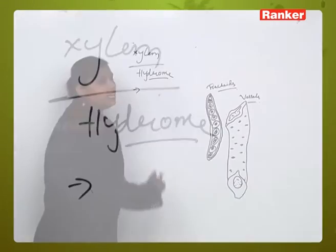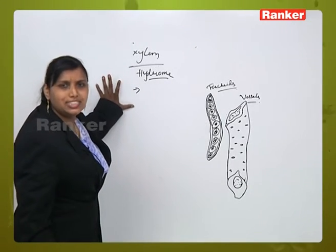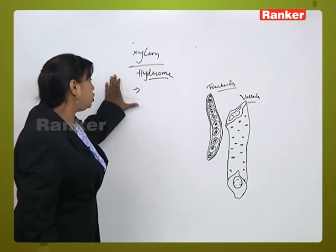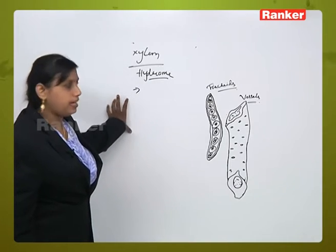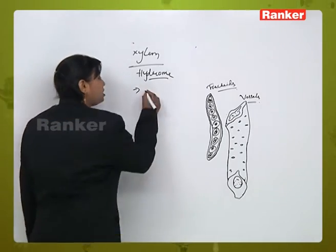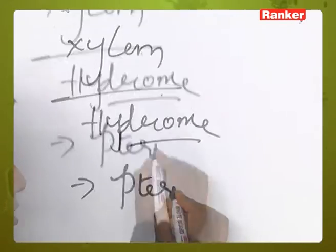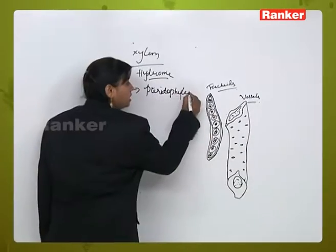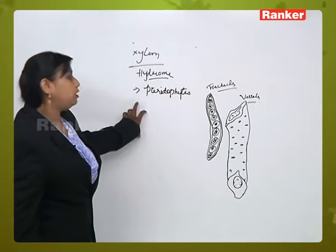This is considered as one of the conducting systems, conductive tissues present in all vascular plants. It was first seen in pteridophytes. Xylem was first observed in pteridophytes.